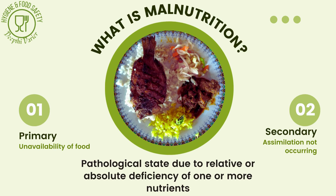This eventually causes a lot of disastrous effects, which we will look at shortly. There are two major types of malnutrition: primary and secondary.